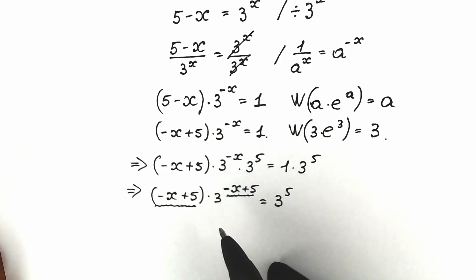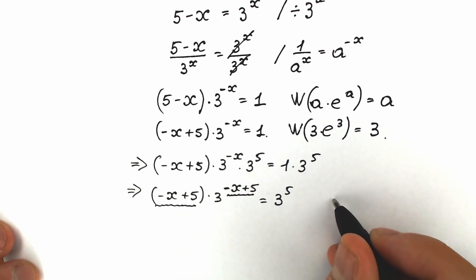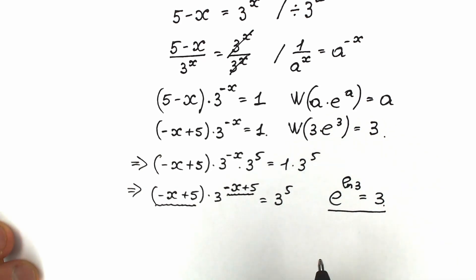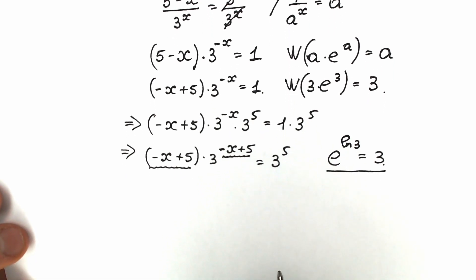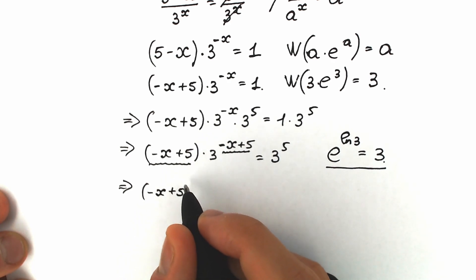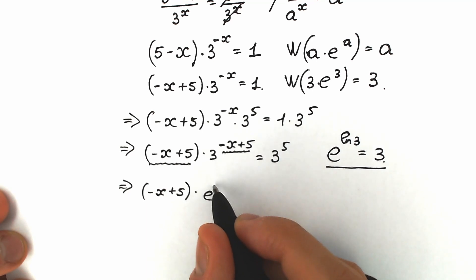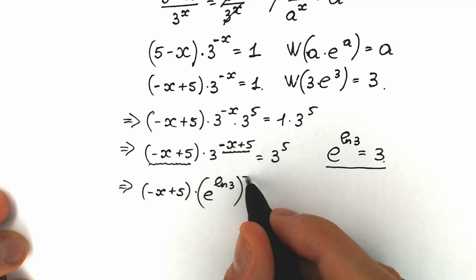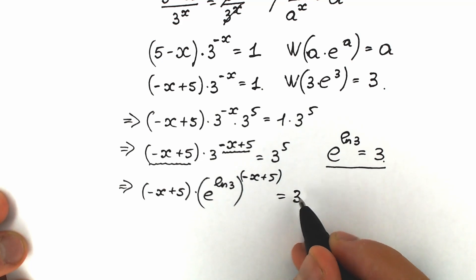There is a really great trick: when we write e to the power of natural log 3, that equals 3. So instead of this 3 we are going to substitute e to the power natural log 3. As a result we have minus x plus 5 times, instead of 3 we write e to the power natural log 3, and we raise it to the power minus x plus 5 — taking it inside the parentheses — equal to 3 to the power 5.